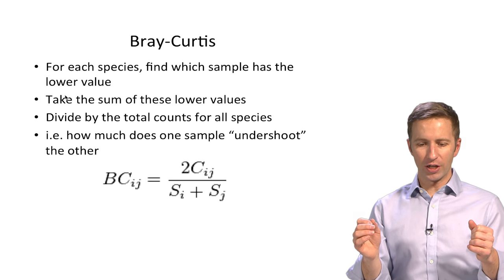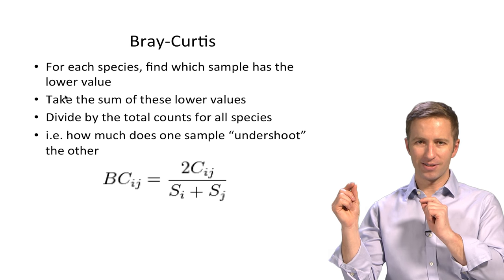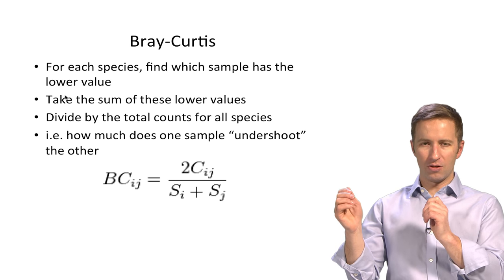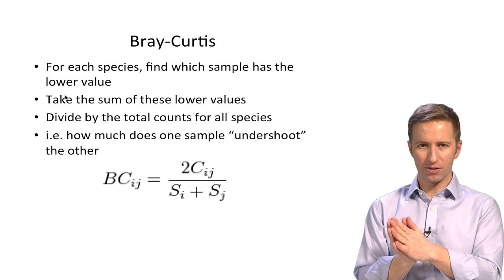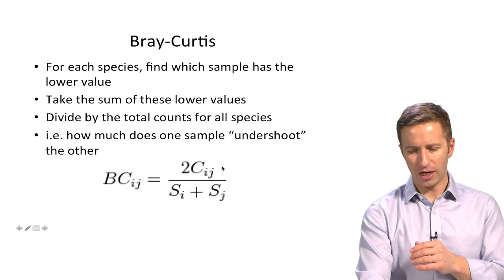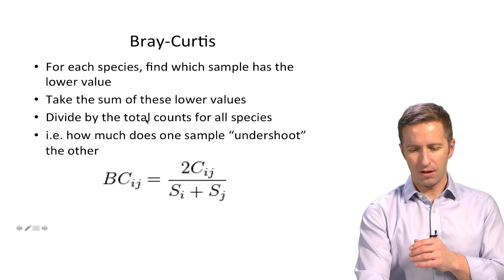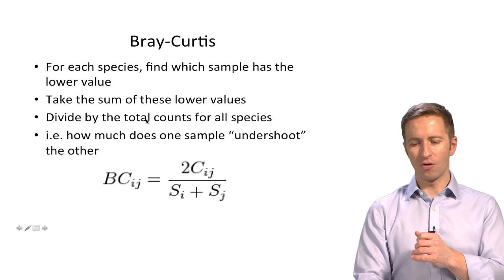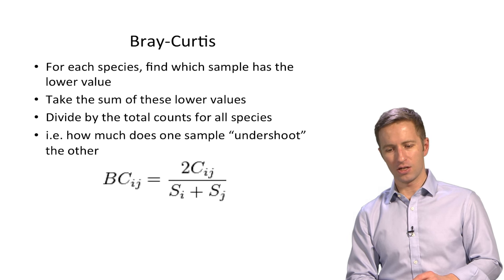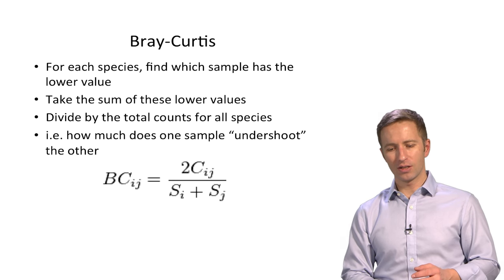beta diversity is comparing two different samples. And we want to find out overall how different their microbiomes are. So you walk through each of the species in each sample. And for each species, you find which sample has the lowest value. And you take the sum of those lower values. So that's shown here as C-I-J. So that's the low value.